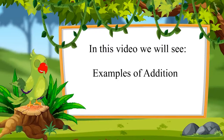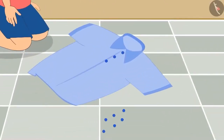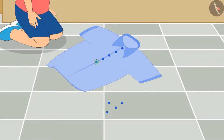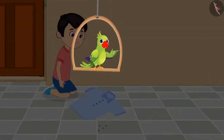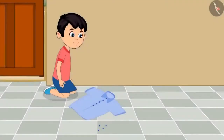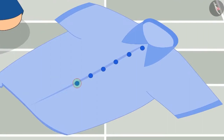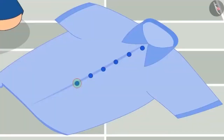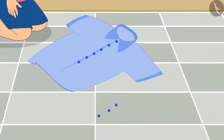Let us see some more examples. Today Chotu wants to stitch buttons on his shirt. He already stitched three buttons and then one more — three and one is four. Then he stitched one more: four and one more is five. Now count and tell how many buttons are stitched. Yes — five buttons! Then Chotu stitched one more: five and one is six buttons.